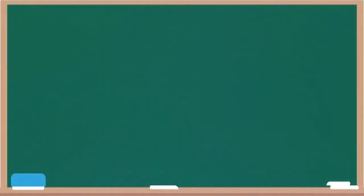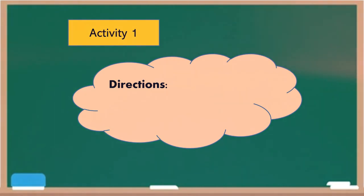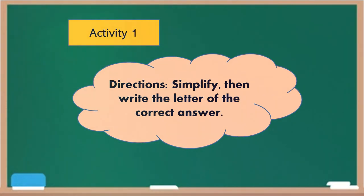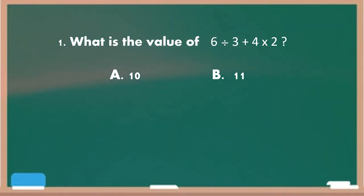Okay, let me see if you can follow the rules in performing series of operations. Please do activity 1. Directions: Simplify then write the letter of the correct answer. Number 1. What is the value of 6 divided by 3 plus 4 times 2? Letter A, 10. Letter B, 11. Letter C, 12. And letter D, 13. Go! Time is up. The correct answer is letter A.